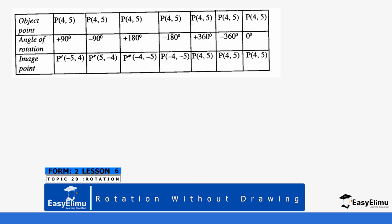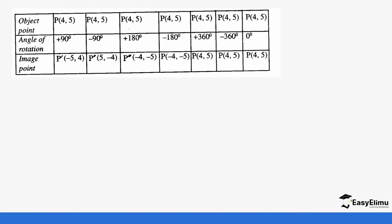Let's focus first on positive 180° and negative 180°. When you rotate a point at positive 180° and negative 180°, you get the same image. When rotating at positive 360° or negative 360°, you end up at the same point where you started — it doesn't move. At zero degrees you also remain at the same point.